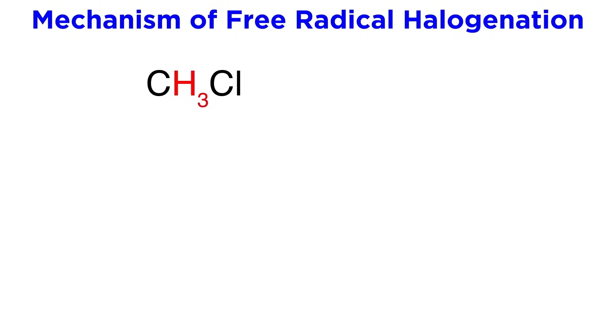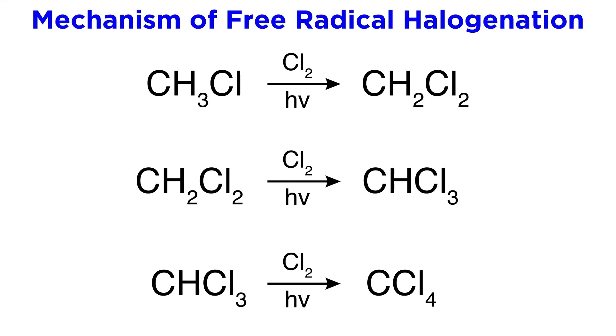We have three more carbon-hydrogen bonds left, and if a chlorine radical collides with one of these, further reactions can take place. This can result in a second, third, or even a fourth chlorine atom getting on there.